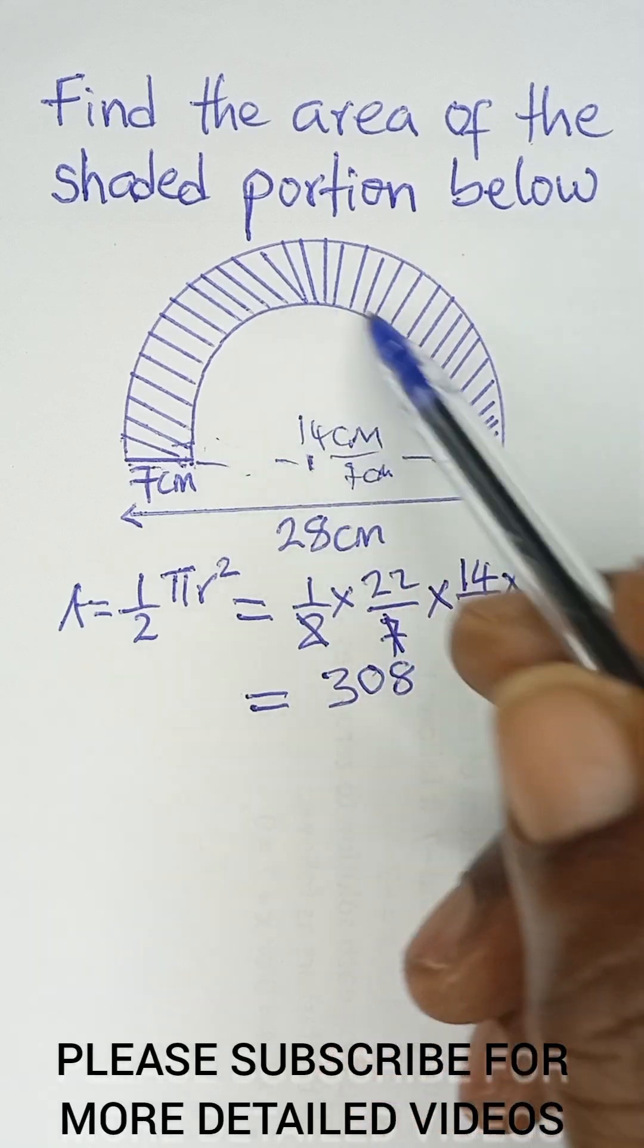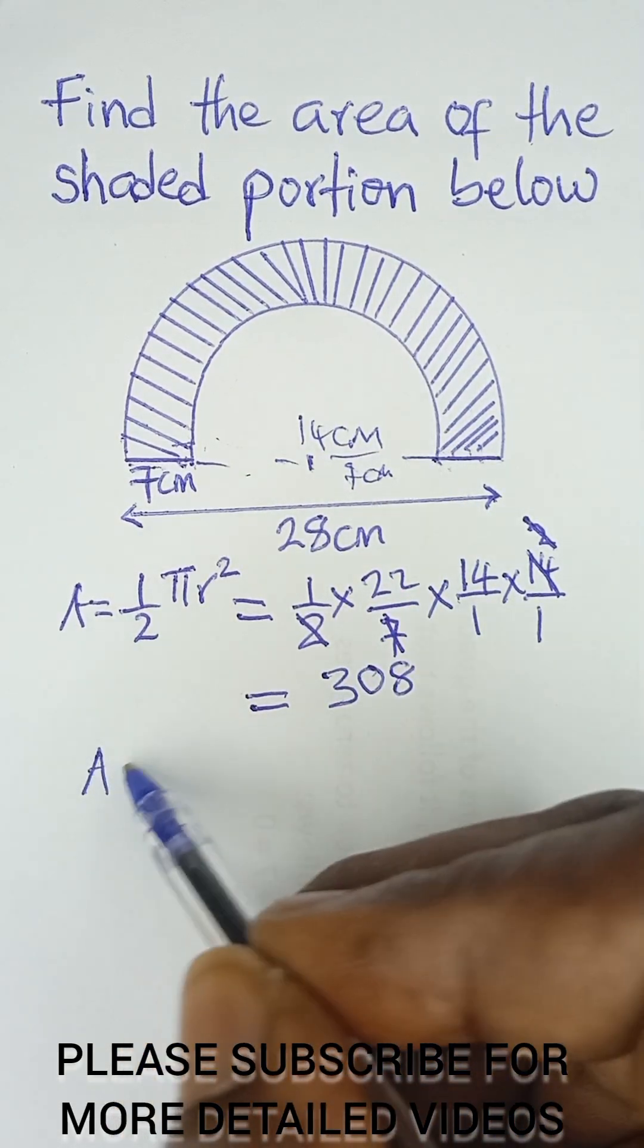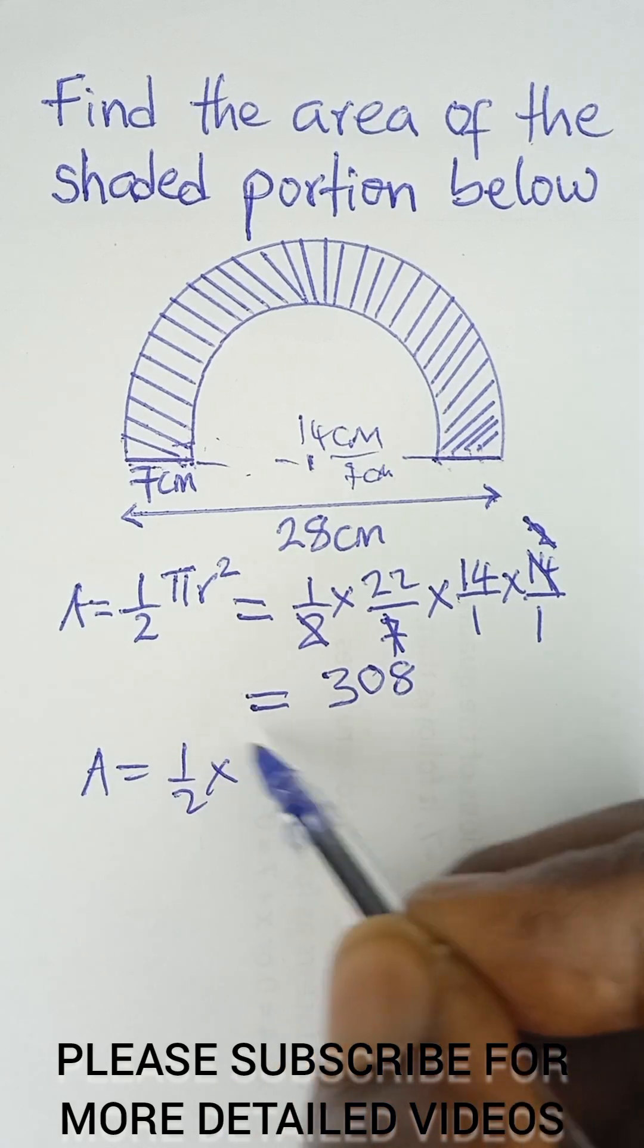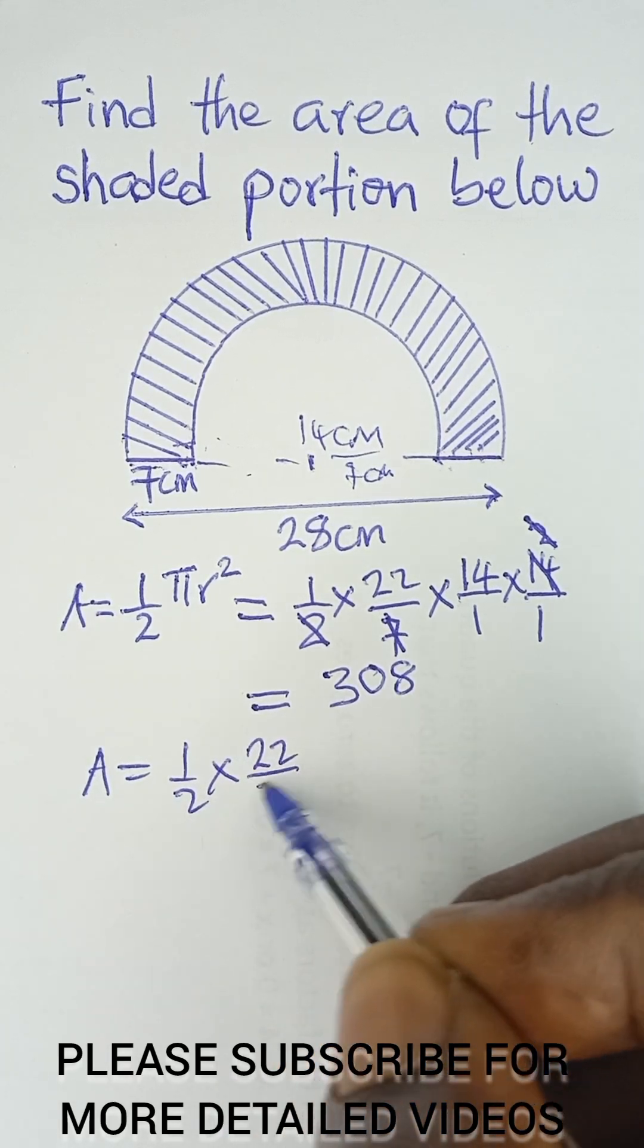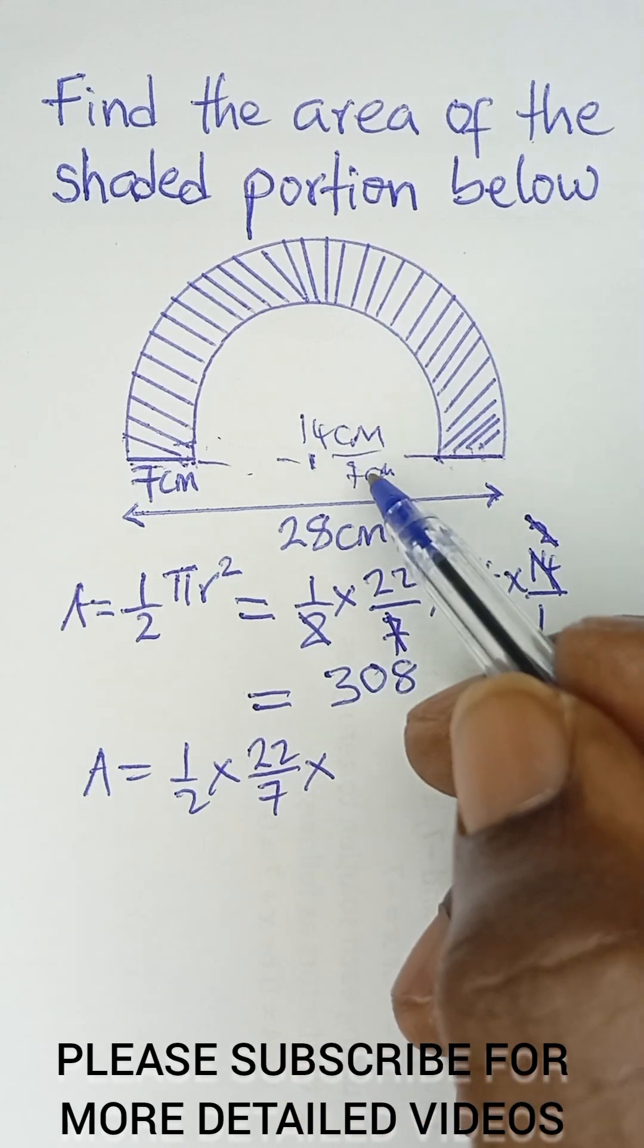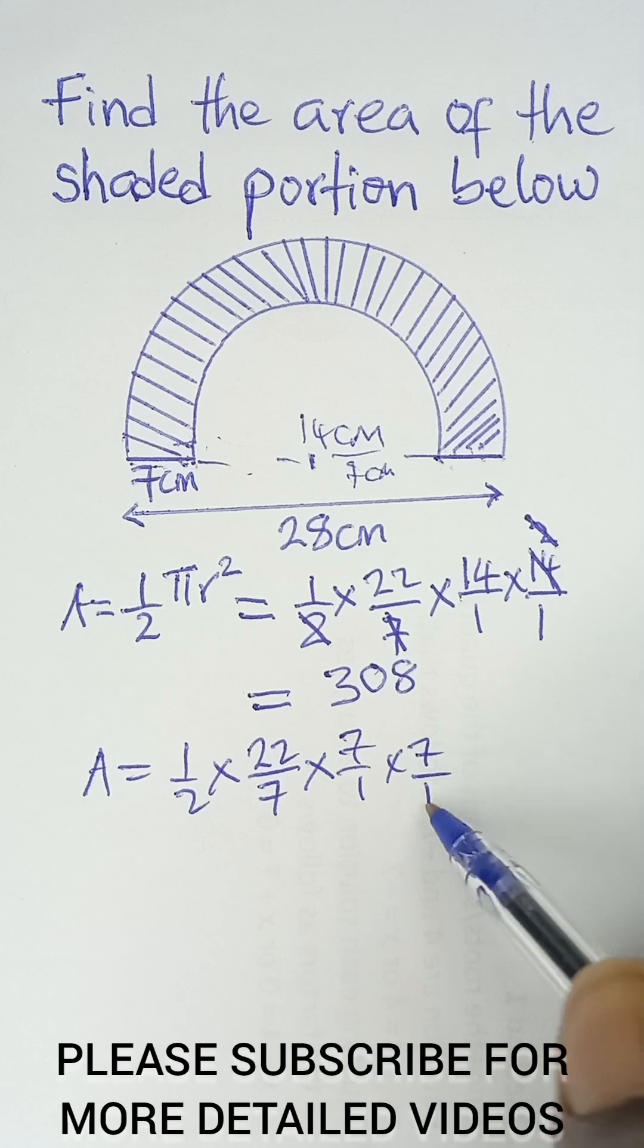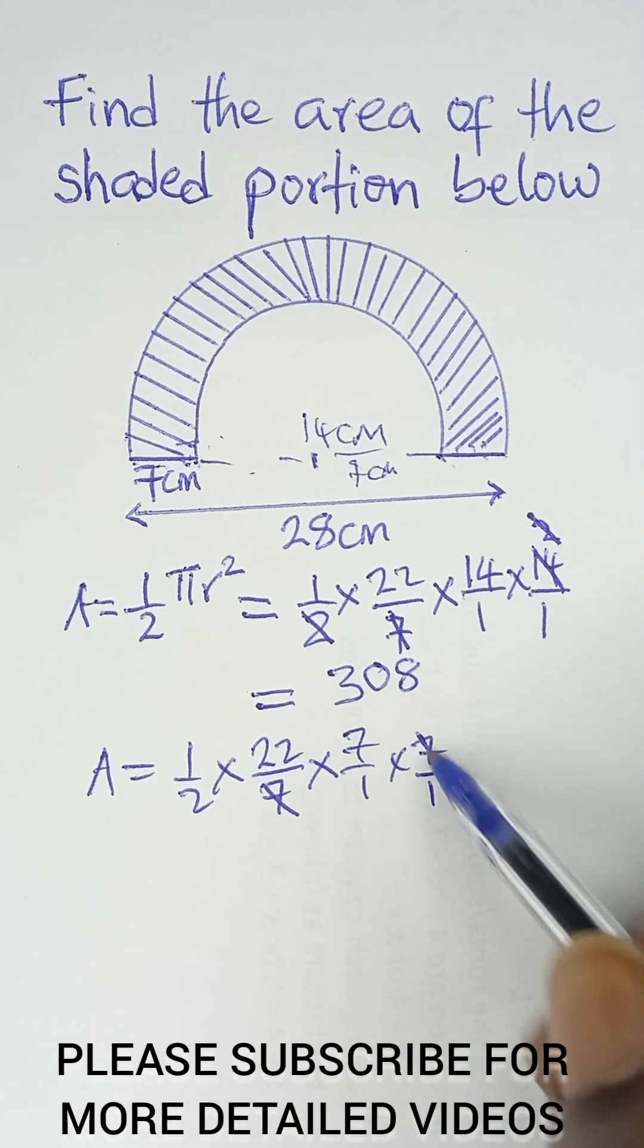So that means the area of this part will be A, which equals half, multiplied by the value of π, which is 22/7, and then multiplied by r². That is r is 7. So 7/1 times 7/1. 7, we cancel 7.